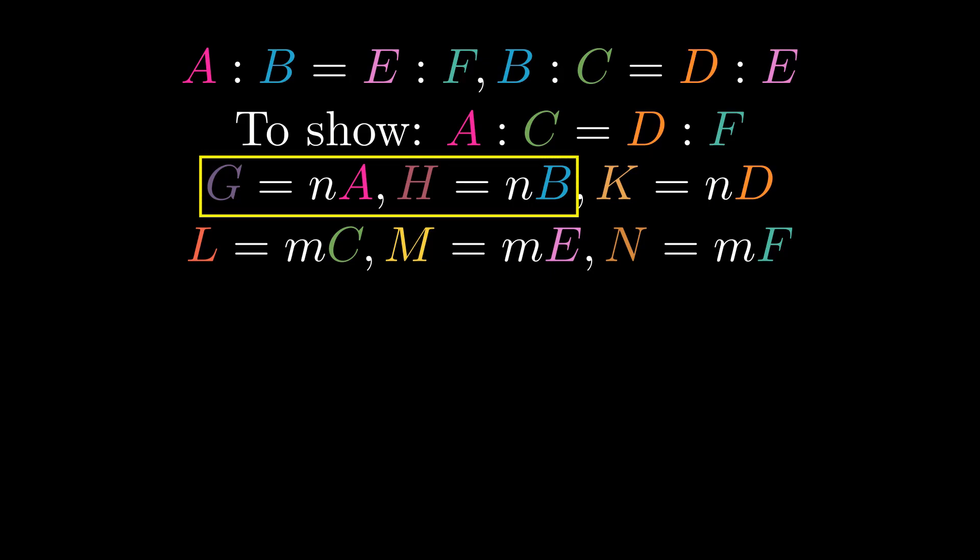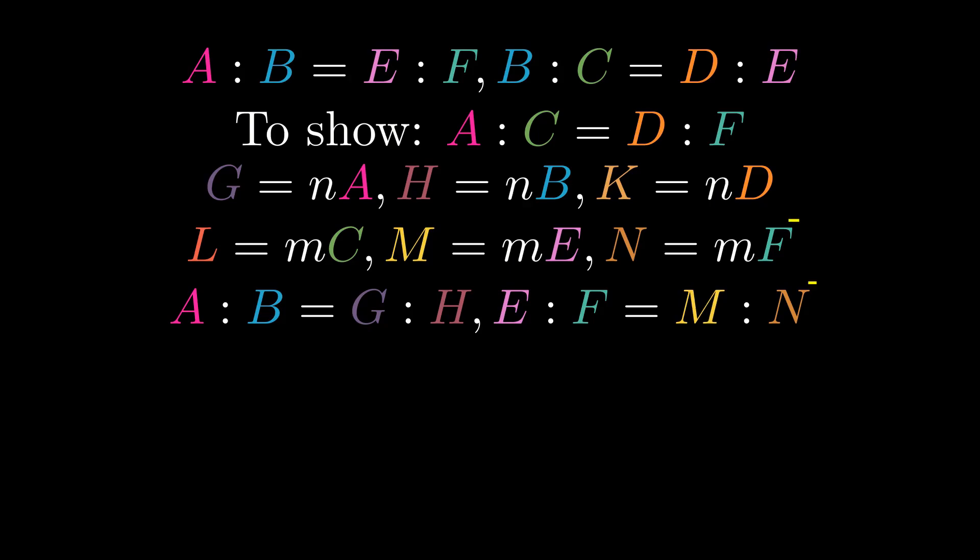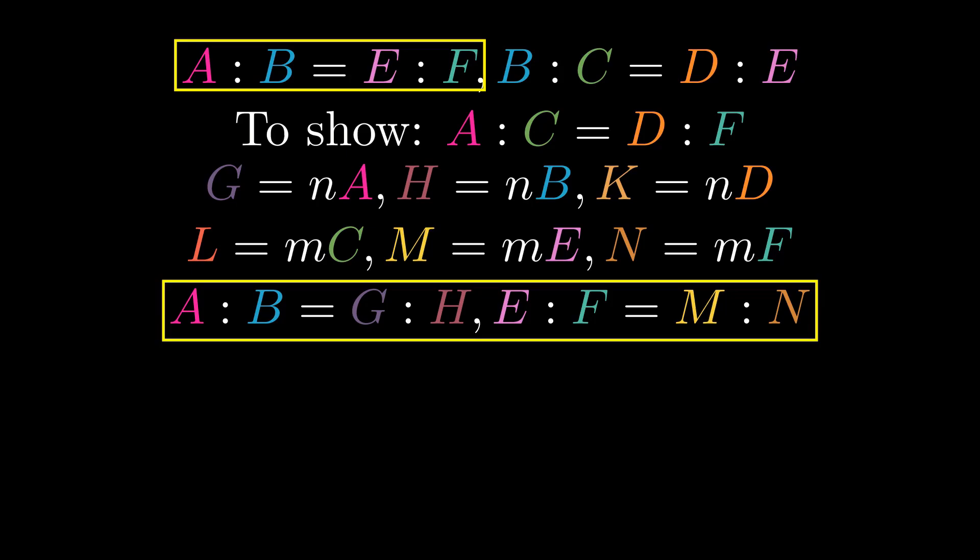Since G and H are respectively equal multiples of A and B, A to B is proportional to G to H. And for the same reason, E to F is proportional to M to N. But A to B is proportional to E to F, so G to H is proportional to M to N.